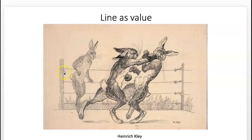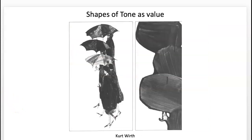Here's another example of line weight as value. This is all done through printmaking work by Heinrich Klee — he's doing intaglio etching on metal plates. Shapes also have value, and tone is another word we could use. We're going to be using shapes of tones or values in this project.